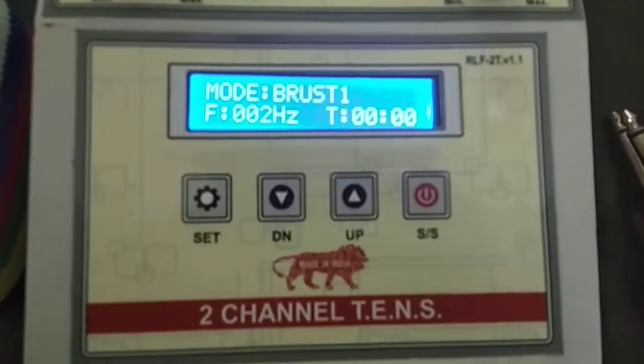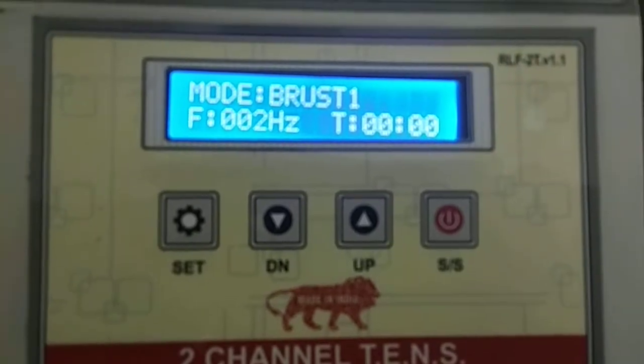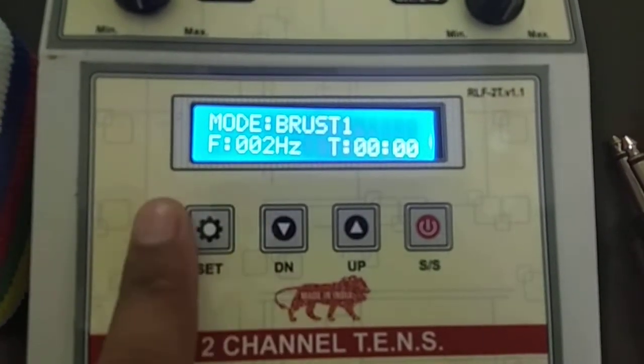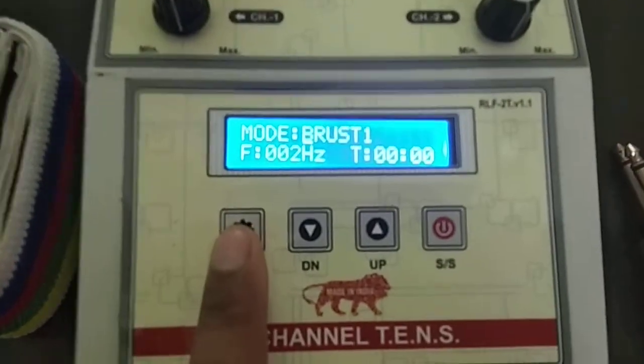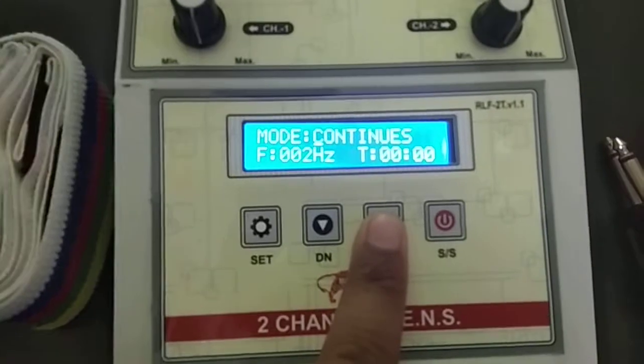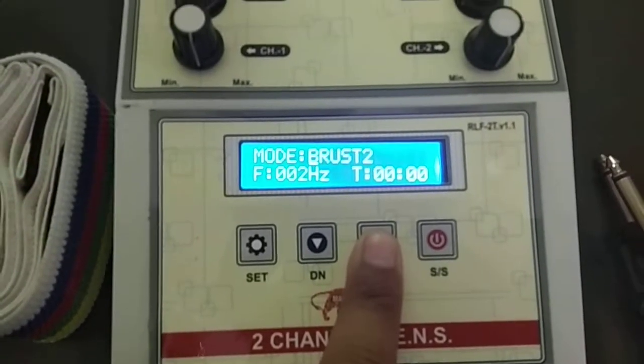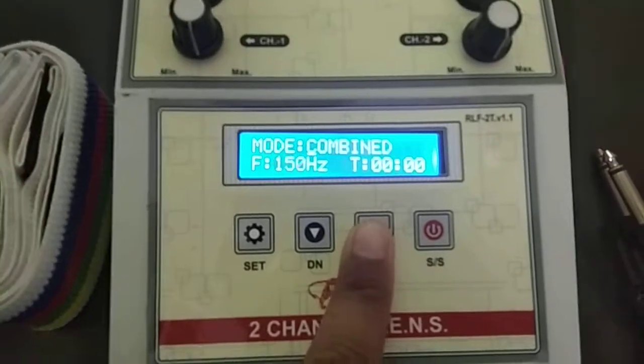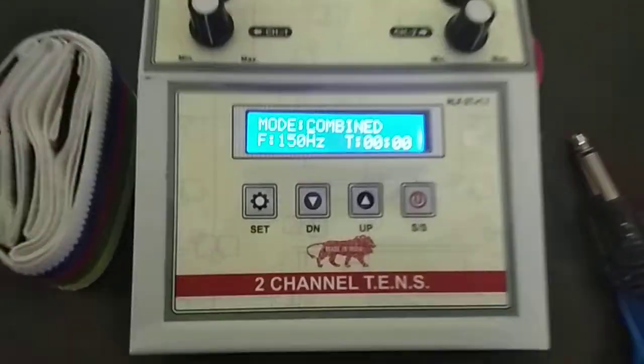Now the device is switched on. There are 6 programs: burst 1, continuous, burst 2, PWM, sweep, and combination, that is called combined.